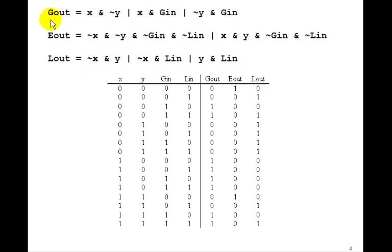So we've got a logic equation for g out, e out, and l out. And therefore, we've solved the little problem of a 1-bit comparator.